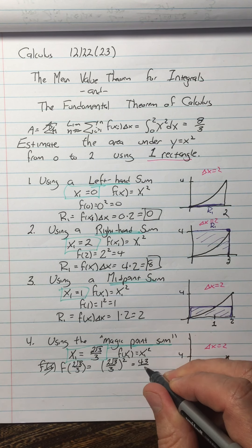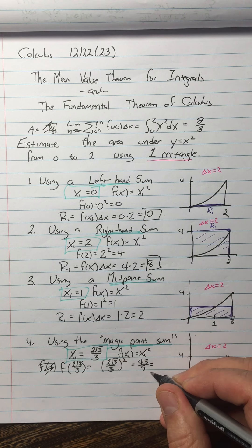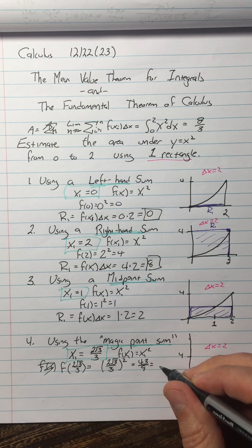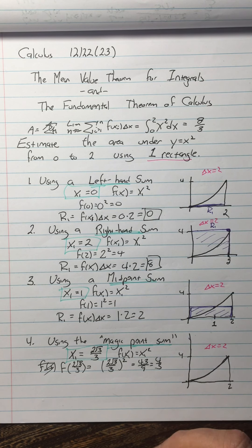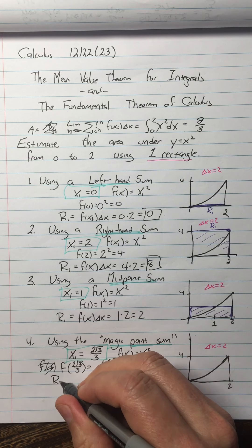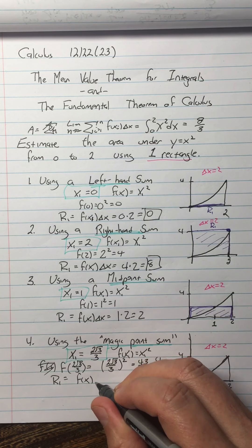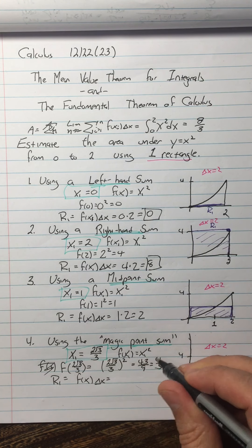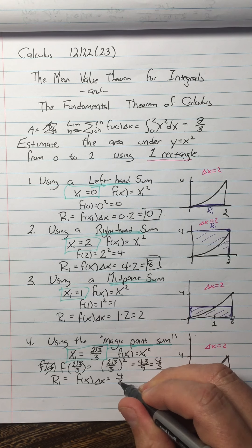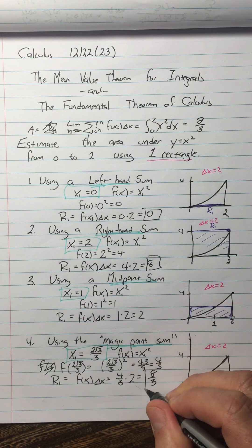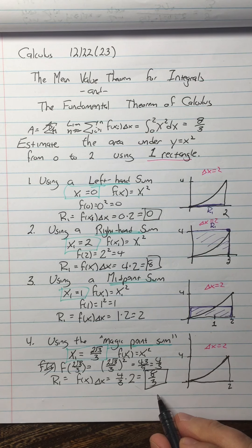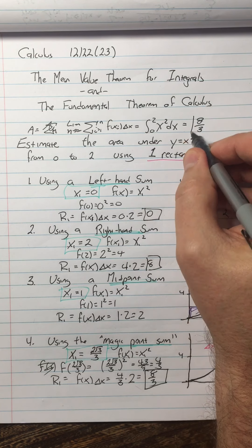Now, r1 is equal to f of x1 times delta x, which is our 4 thirds times our delta x, which is always 2, and that's 8 thirds. How close did we get to the actual area? It is exactly the right area.